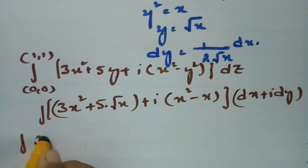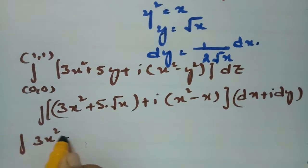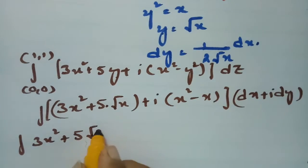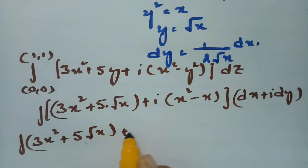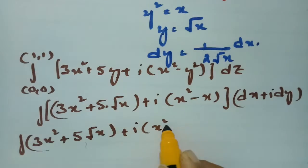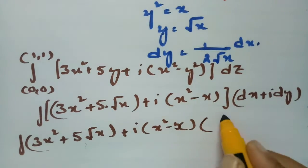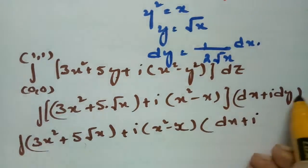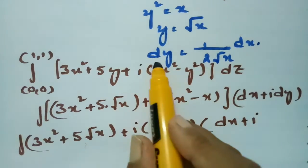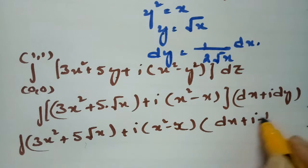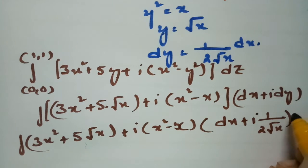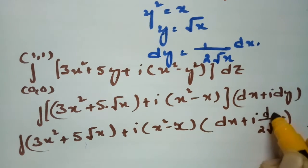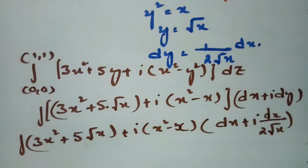After substituting, the integrand becomes: 3x² + 5√x + i(x² - x), and dz becomes dx + i · [1/(2√x)] dx.